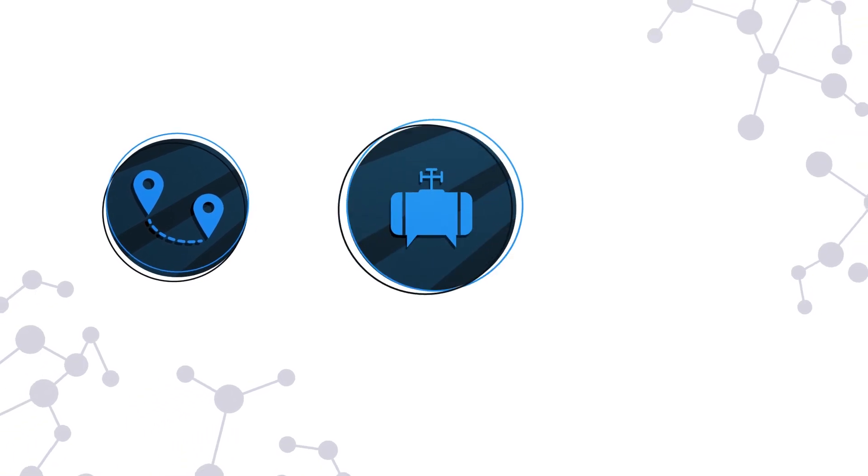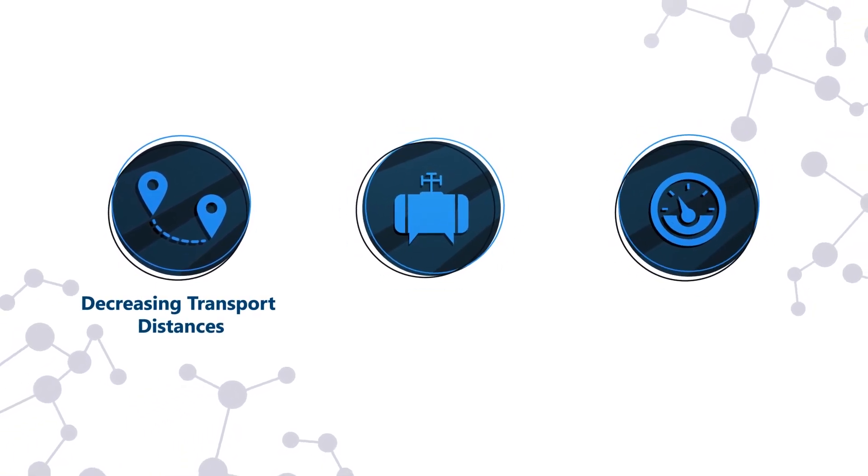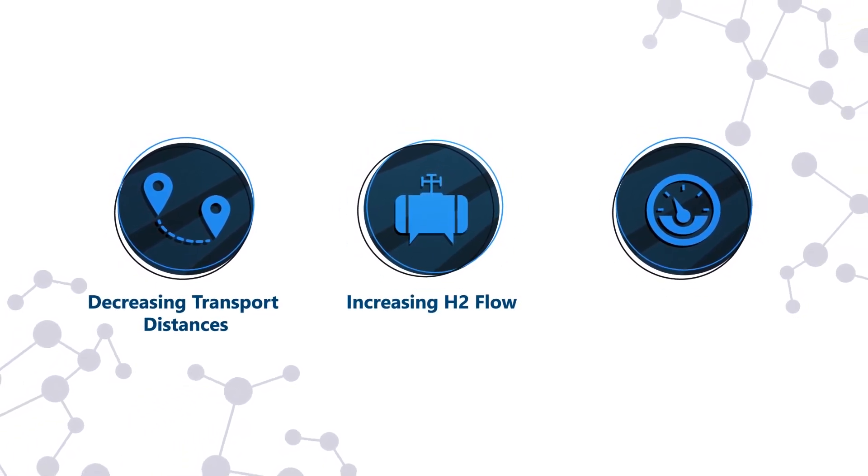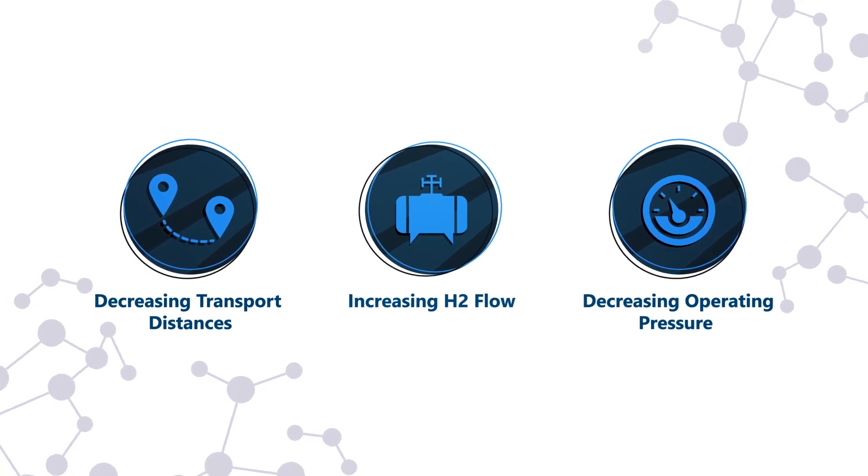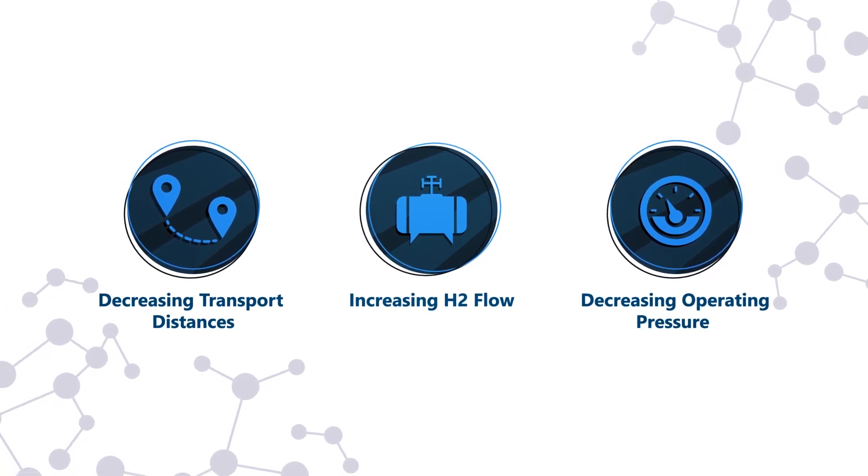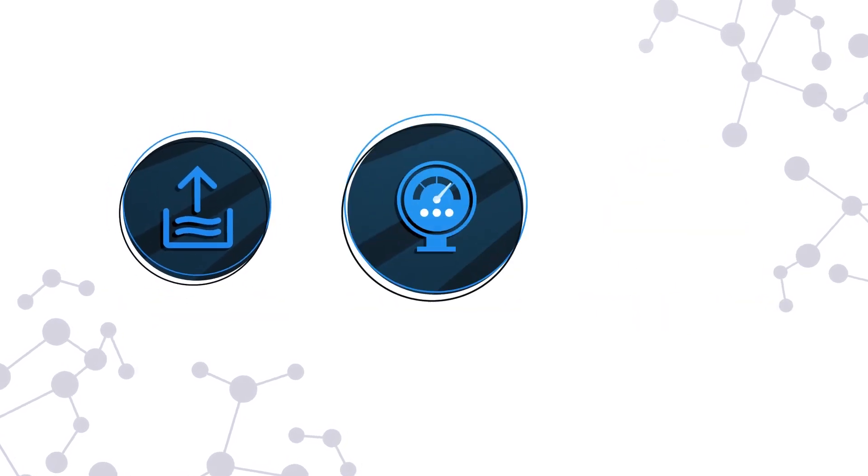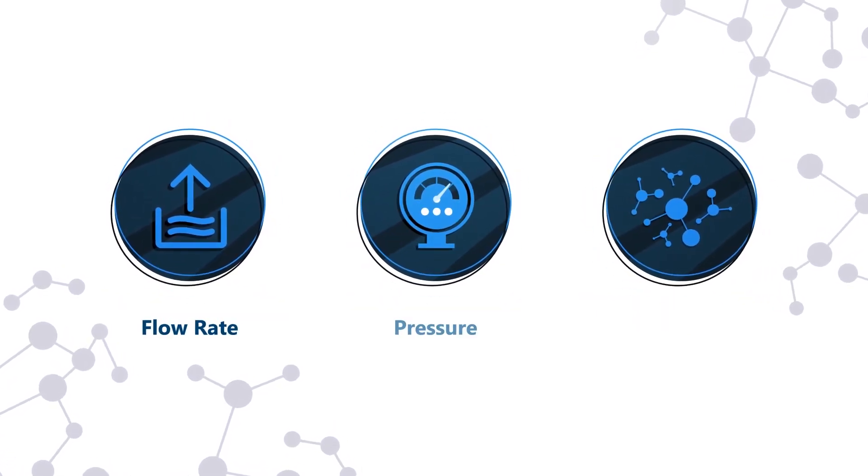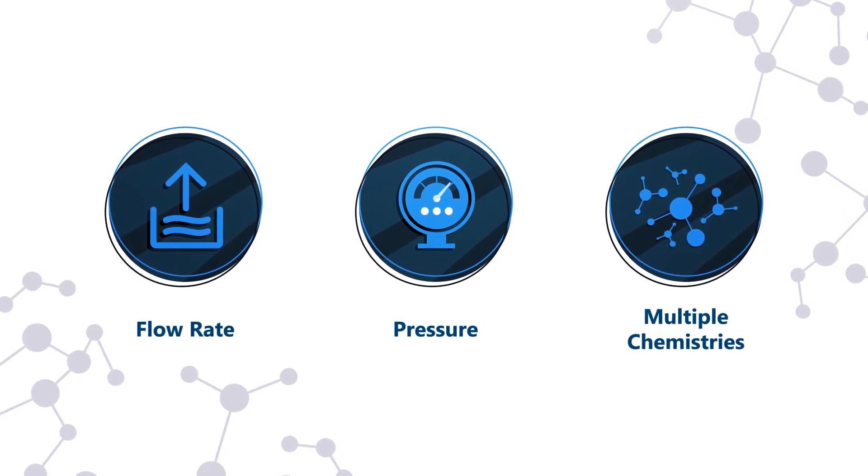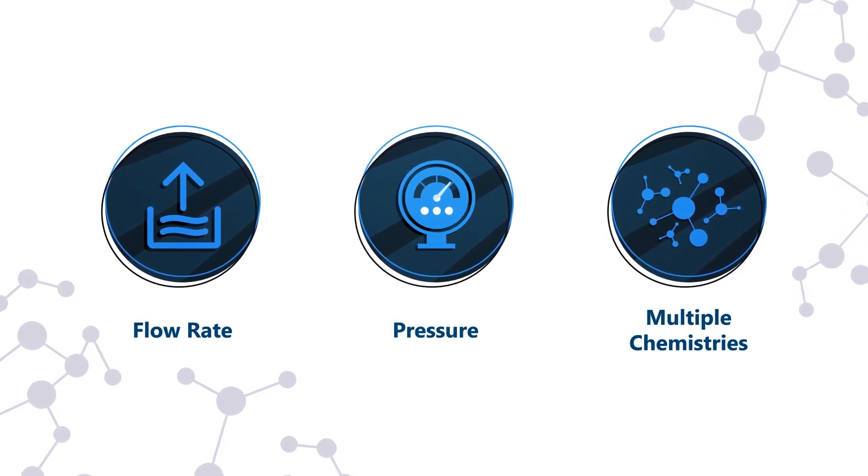Reducing radical residence time by decreasing transport distances, increasing H2 flow, decreasing operating pressure, or adding a diluent gas improves RPS performance. Our RPS technology provides a wide range of process flow rates and pressure and operates with multiple chemistries, ensuring greater process flexibility.